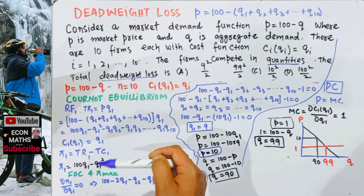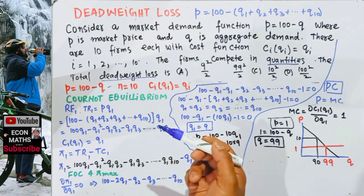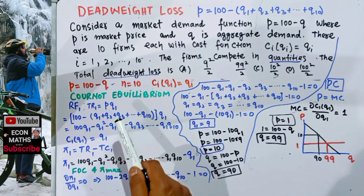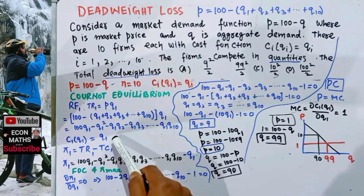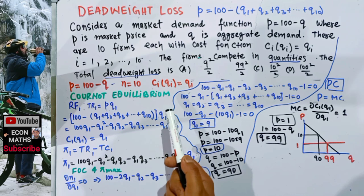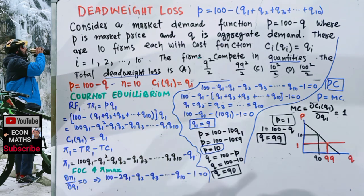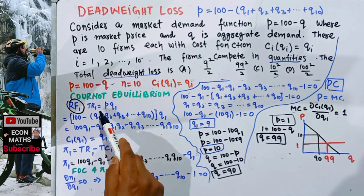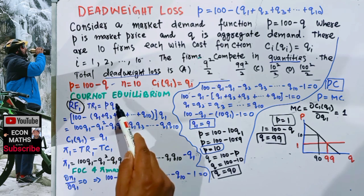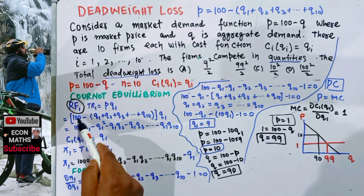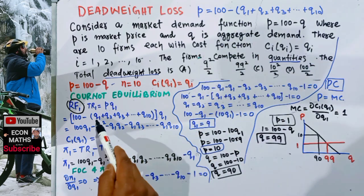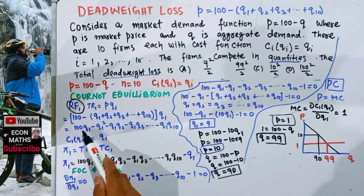To find the Cournot equilibrium, we need to find the reaction function of each firm. The reaction function, also called the best response function, tells us the optimal quantity chosen by firm 1 given the quantities chosen by all other firms. The first step is to find the total revenue function of firm 1: TR1 = P × Q1 = (100 - Q1 - Q2 - ... - Q10) × Q1.